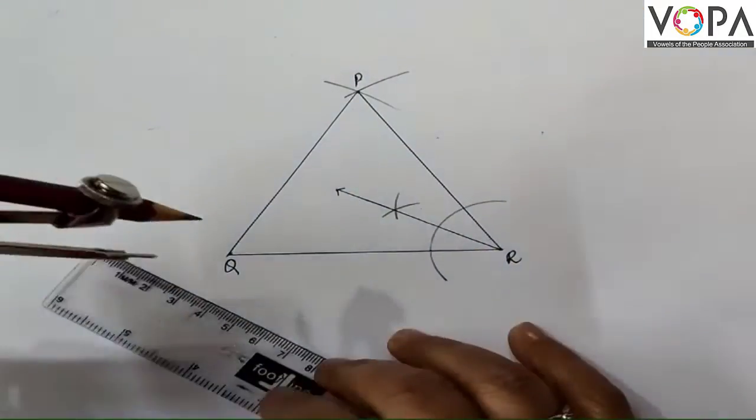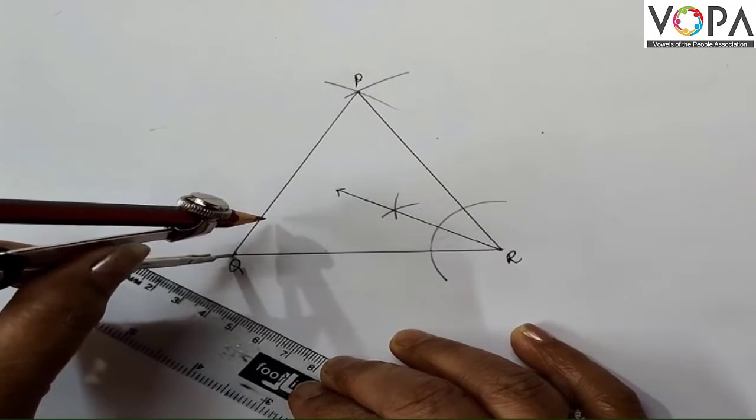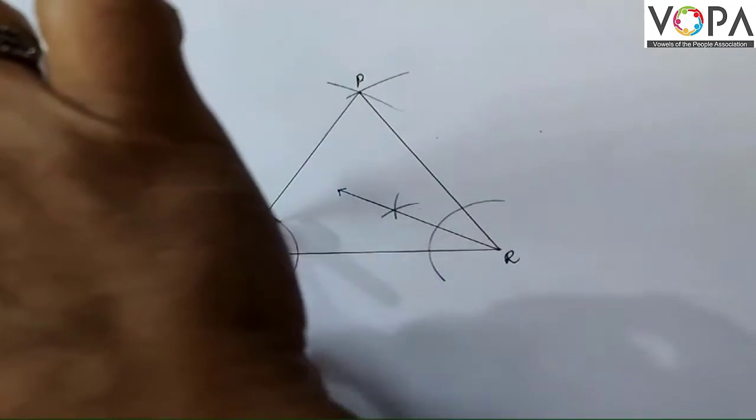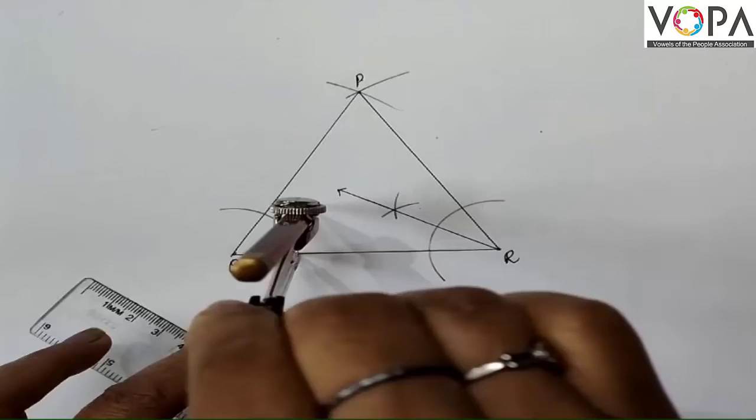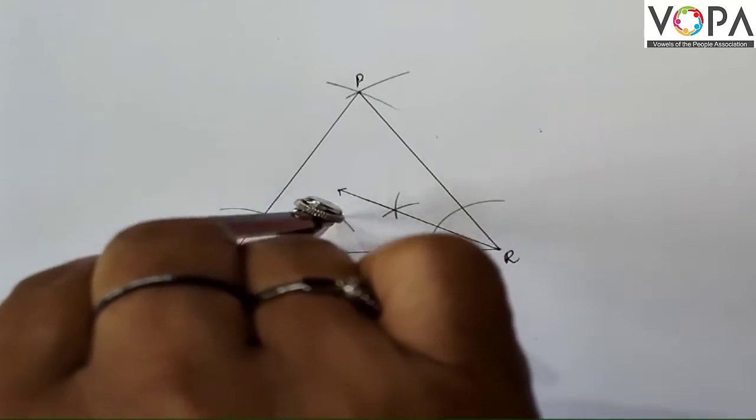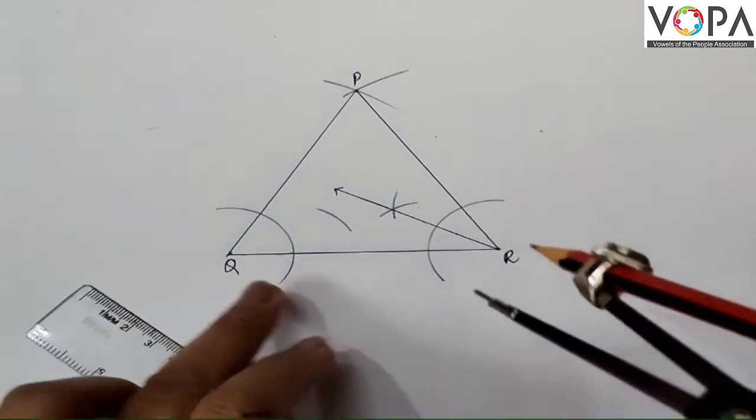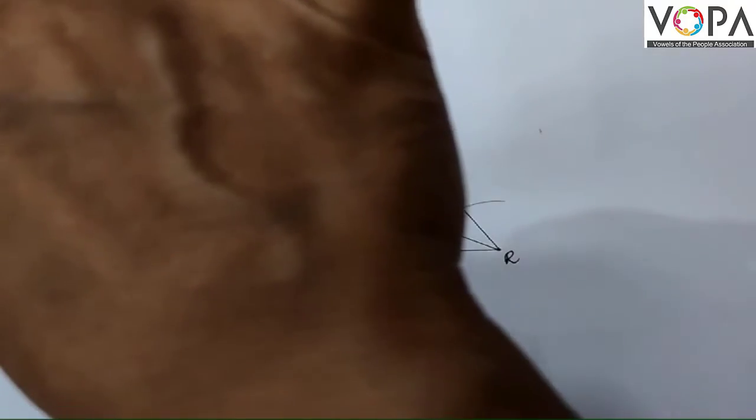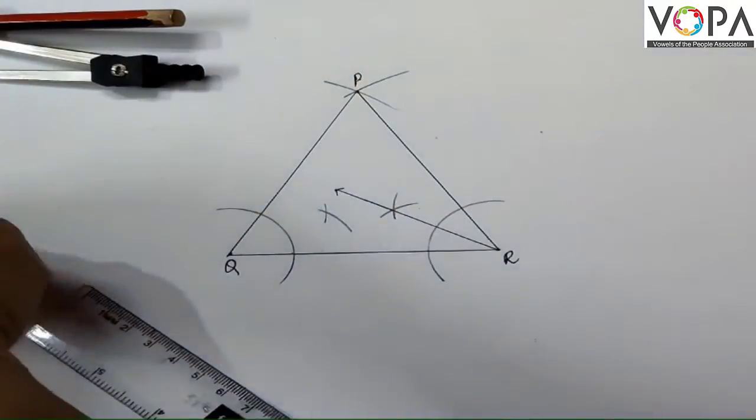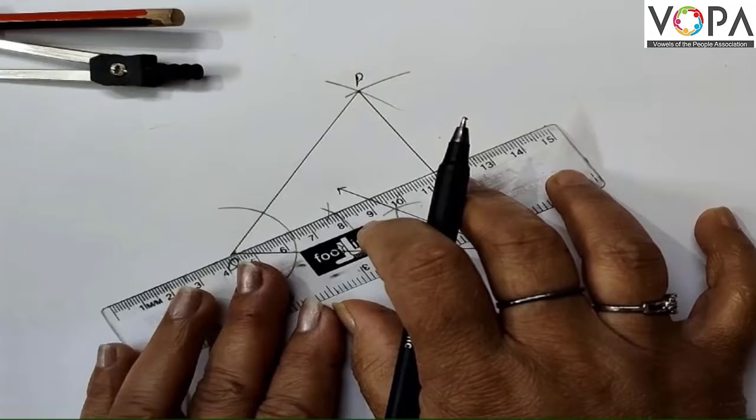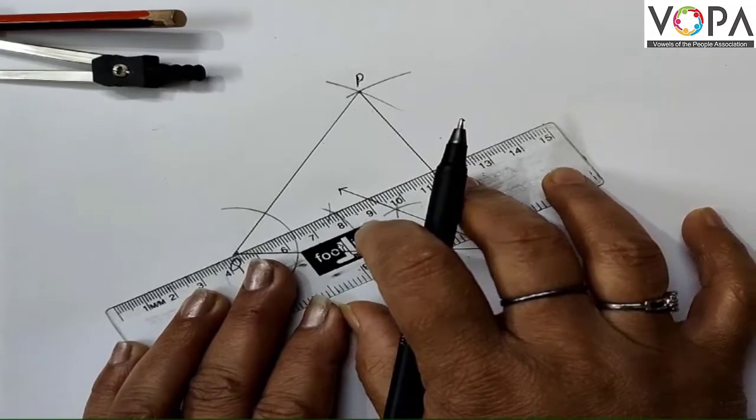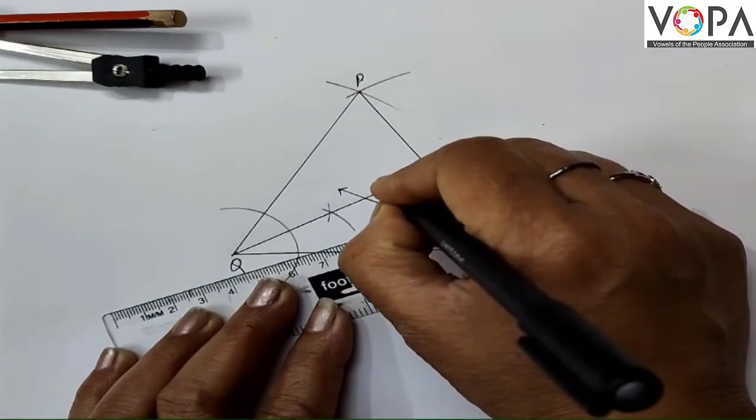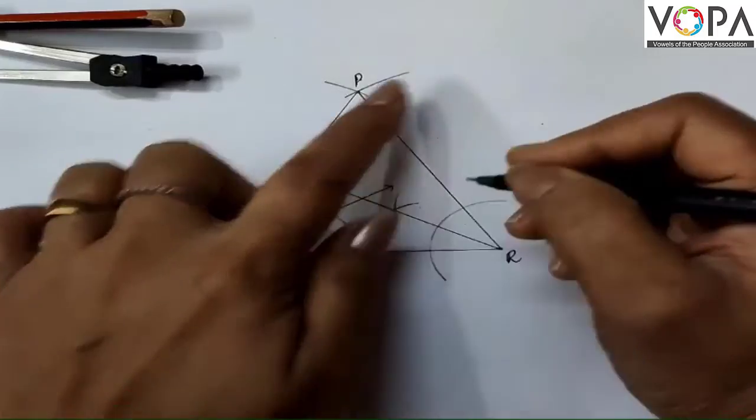Now from here also, in a similar way. Keep it here and draw the arc. From this point, draw an arc wherever it's stretching on one side, and this side also. Keep it and draw. And then join this also.